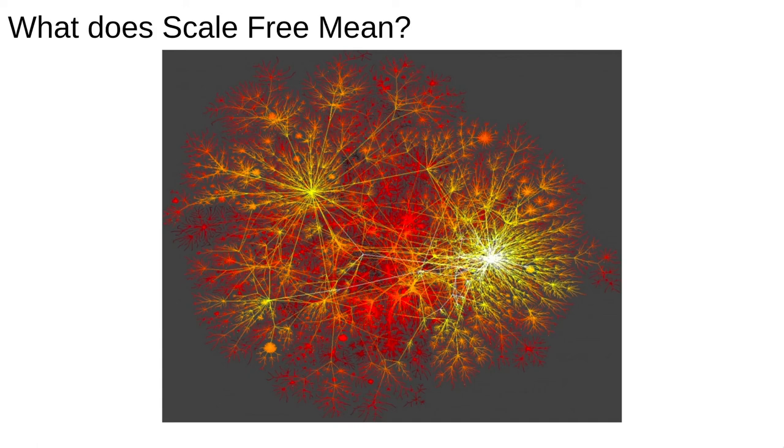Here we can see two key features of a real scale-free network. The first, which is where the term scale-free comes from, is that if you zoom into any part of the network, it looks more or less the same as the zoomed out version. The network has a self-similar fractal structure. This is what scale-free means.